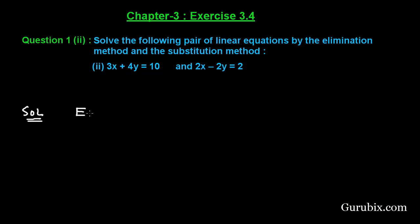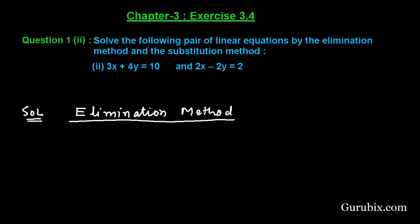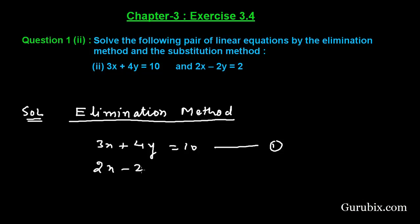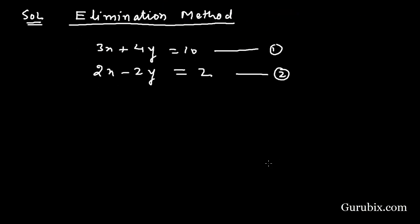In the elimination method, we collect the given equations: 3x + 4y = 10, this is equation number 1, and 2x - 2y = 2, this is equation number 2. In this method we make the coefficients of either x or y equal by multiplying by a proper number.